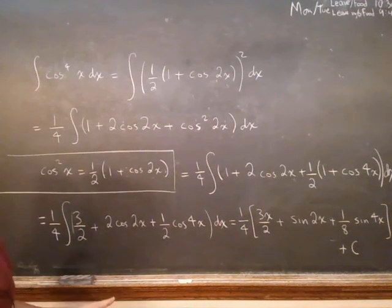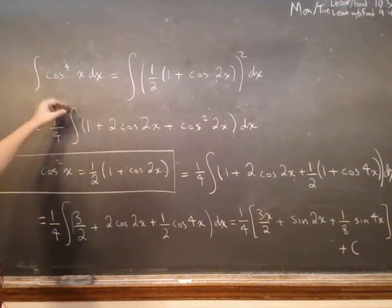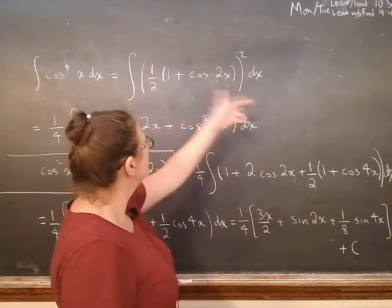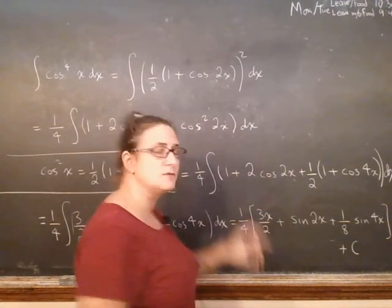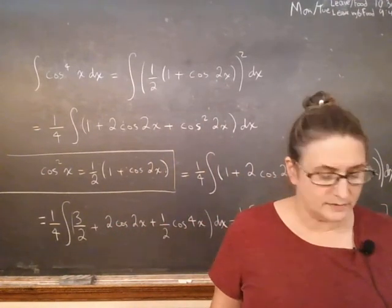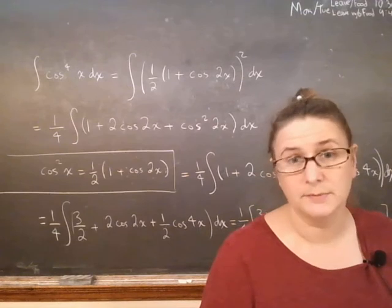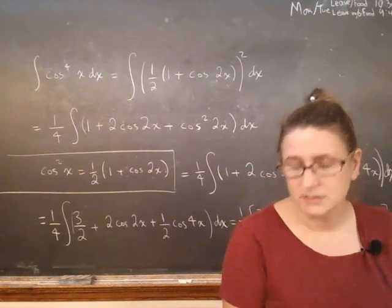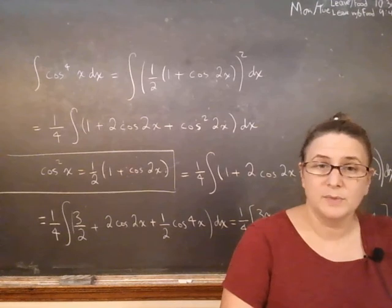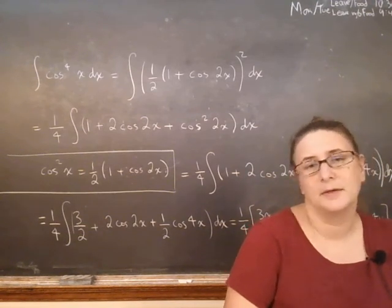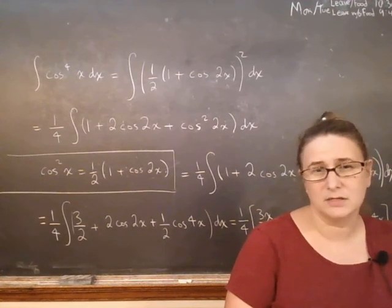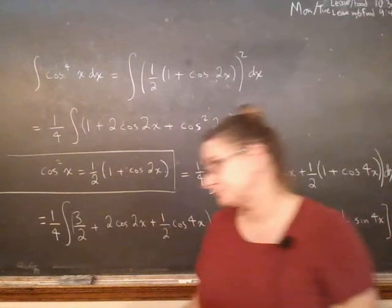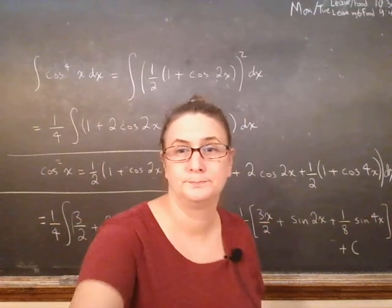So there you have the example. As I said, the higher the power, the more pain. If it was cosine to the fourth times sine squared, you'd have a lot of algebra, squaring and reusing these formulas. Unfortunately, that's just the only way to do these. Sometimes you can use sine 2x equals 2 sine x cosine x, which might make it a little easier, but not necessarily that much easier, because as long as things are squared, you still have to use the half-angle formula. That's just the way it is.